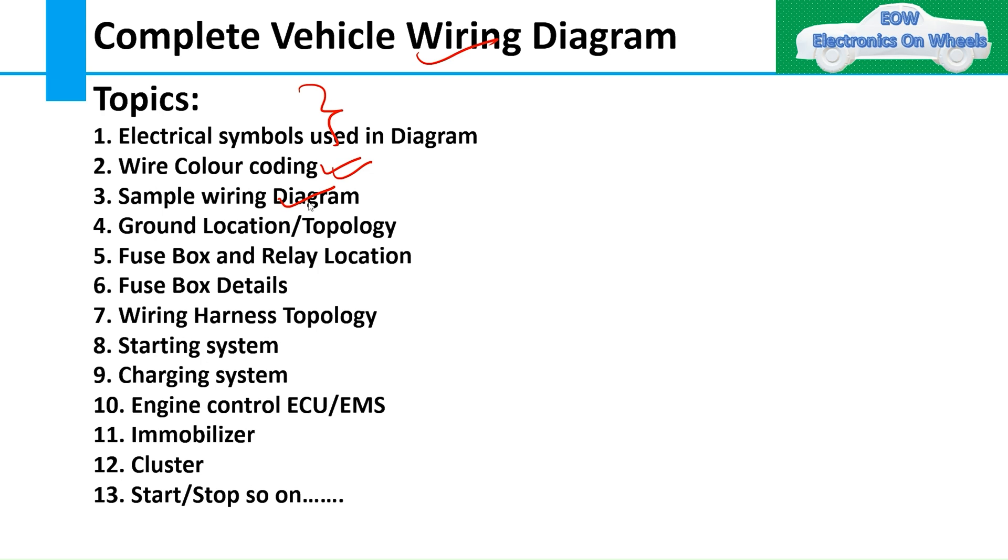Then we'll go to the technical aspects of the wiring diagram where we'll understand ground location and topology. Once you understand the ground location, you'll be able to find particular faults or diagnose them very easily. That's a very important part. Then we'll discuss fuse box and relay locations.